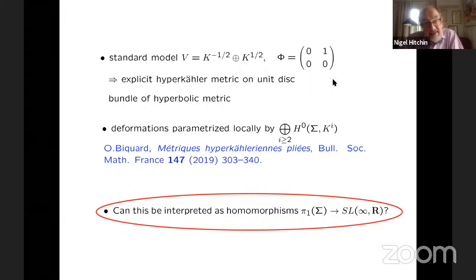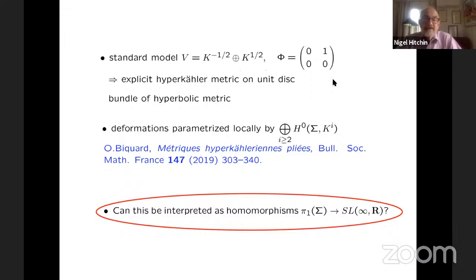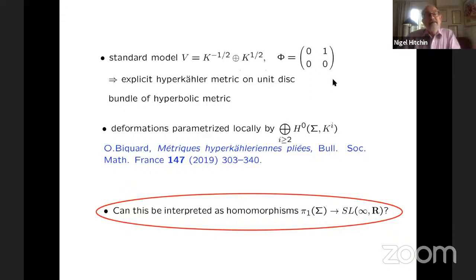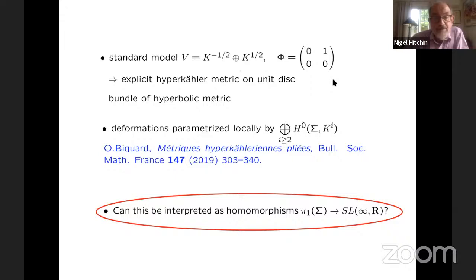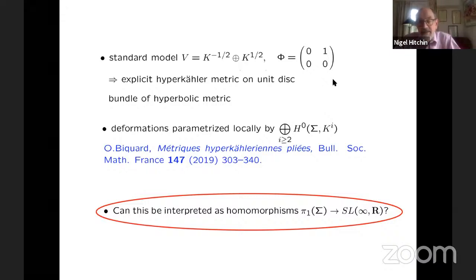The Eguchi-Hanson metric is a complete metric defined on the cotangent bundle of the two-sphere. This is an incomplete metric defined on the cotangent bundle of the disk. And because of its invariance, it descends to the quotient by a discrete group. So you take this explicit hyperkähler metric and then you ask for deformations of this.